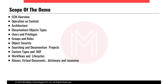Internationalization is making the application available for different languages and other regional differences. By default, Documentum is in English. To make it internationalized, we have to install jars for a specific country or language like French, Italian, or Spanish. These jars are available on the OpenText site — you download them and place them on the application site. They provide an installation guide, and by following the steps, you will know how this can be done.